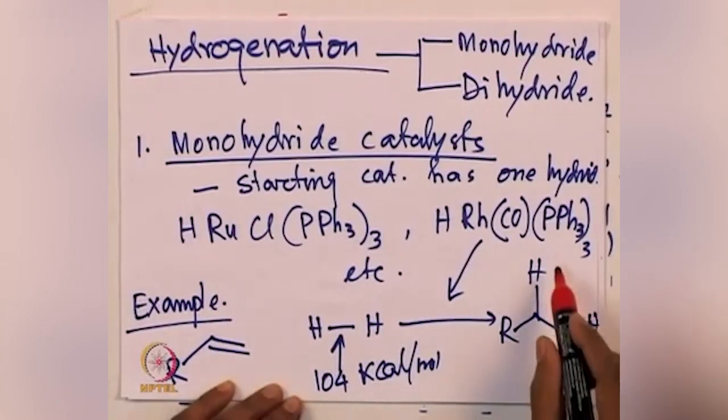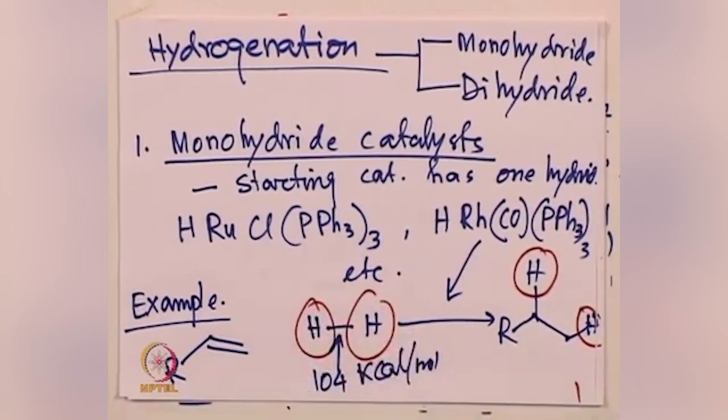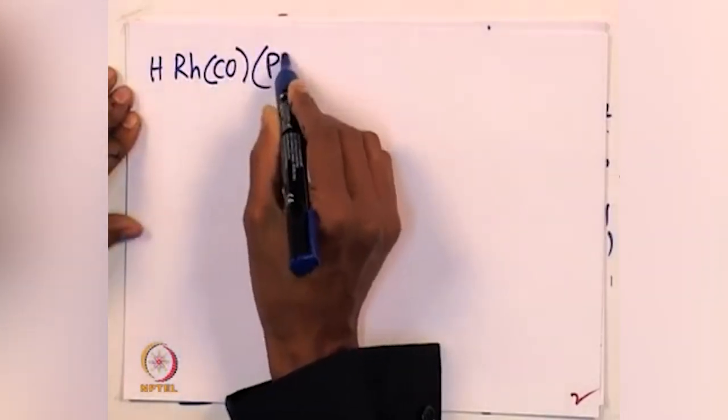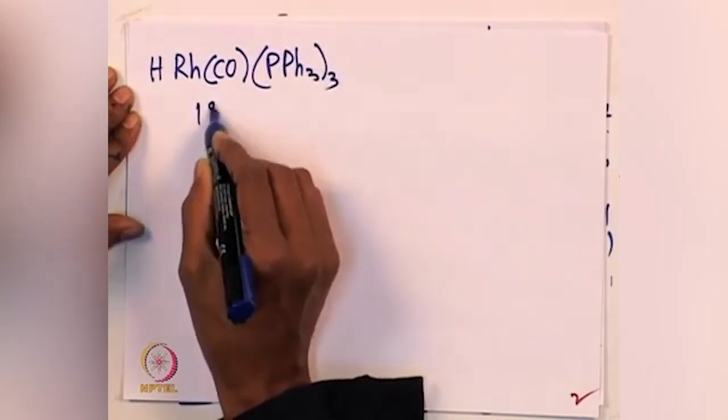Both hydrogen atoms get inserted into the olefin molecule, giving a clean saturated molecule. These are examples of monohydride catalysts where the olefin reacts with hydrogen and two hydrogen atoms are incorporated into it. The reaction mechanism we now need to look at — how these reactions are occurring for the monohydride catalyst. The rhodium catalyst we are taking is an 18-electron complex — please try to count, it is an 18-electron complex.